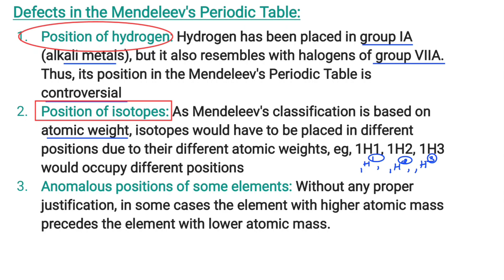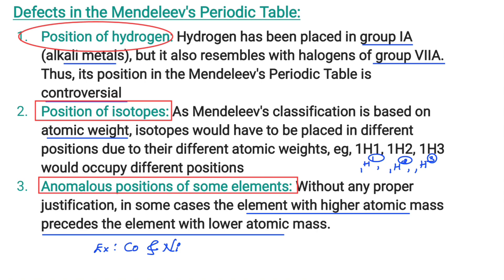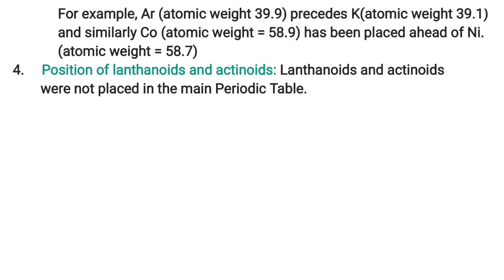Another problem was the anomalous positions of some elements. Without proper justification, in some cases an element with higher atomic mass precedes an element with lower atomic mass. For example, cobalt comes before nickel in Mendeleev's periodic table, even though cobalt has a greater atomic mass than nickel — contradicting his principle of increasing atomic mass. Additionally, Mendeleev could not place lanthanides and actinides in the main periodic table, which is another limitation.